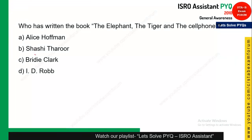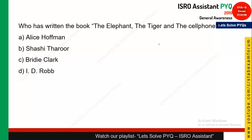Who has written the book 'The Elephant, the Tiger, and the Cell Phone'? This book was released in 2007 and is written by a very famous politician and popular Indian, Shashi Tharoor. Shashi Tharoor has written this book 'The Elephant, the Tiger, and the Cell Phone.'